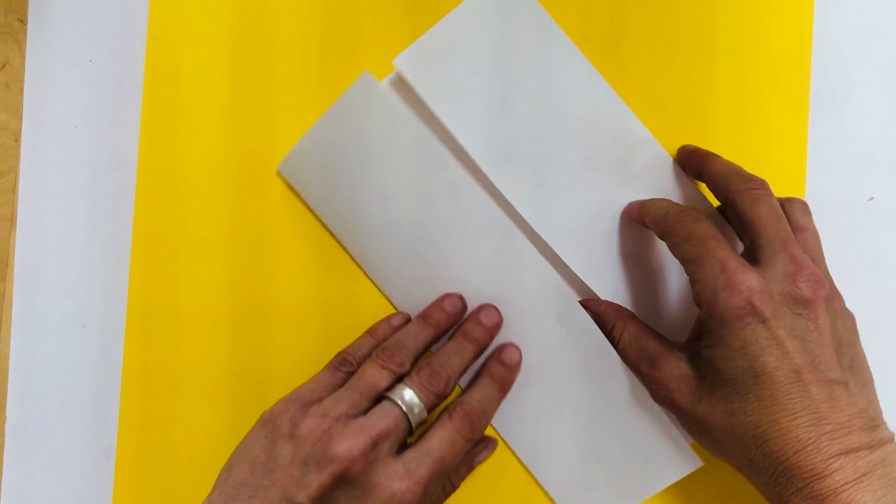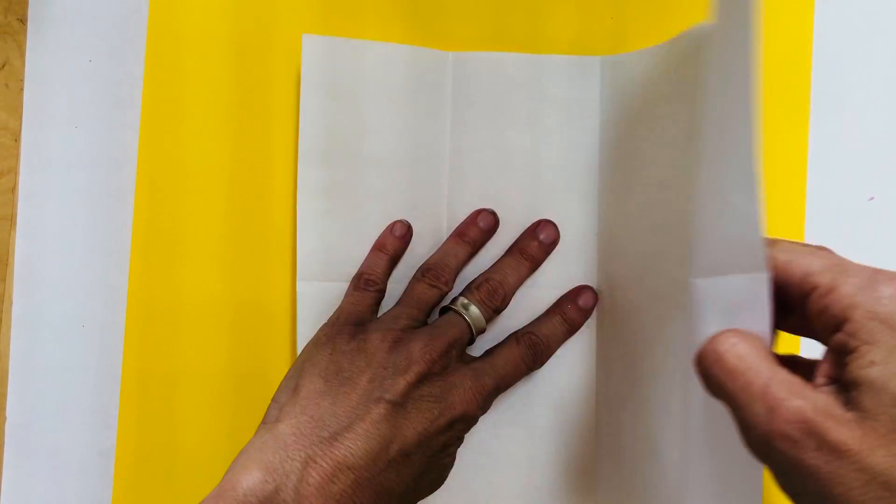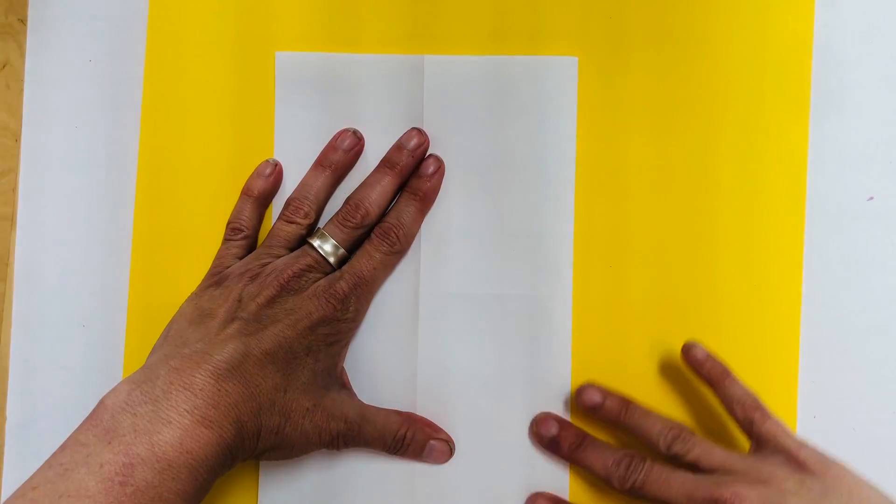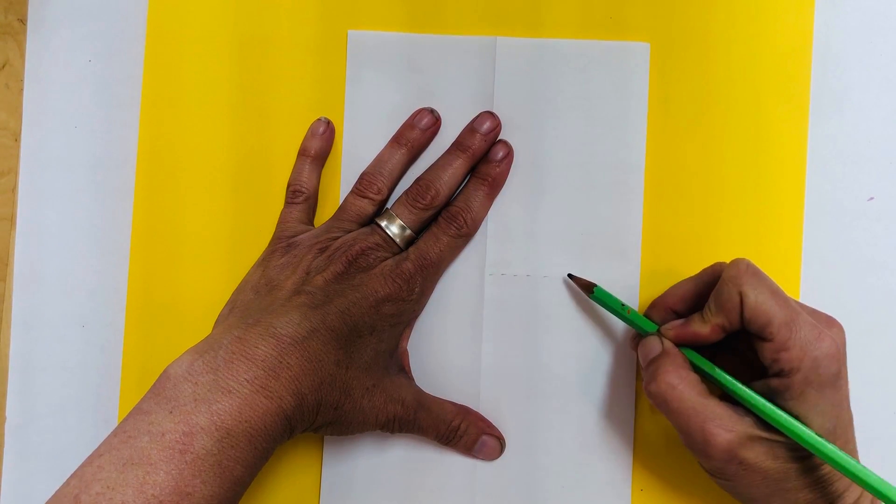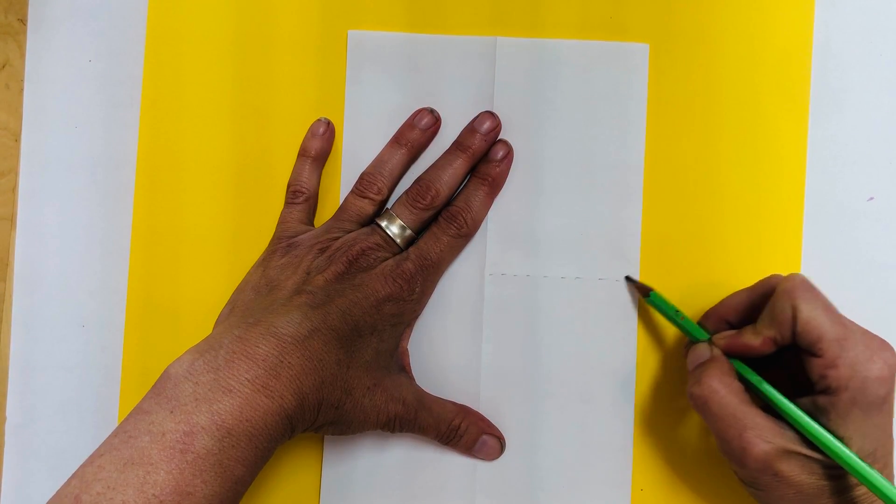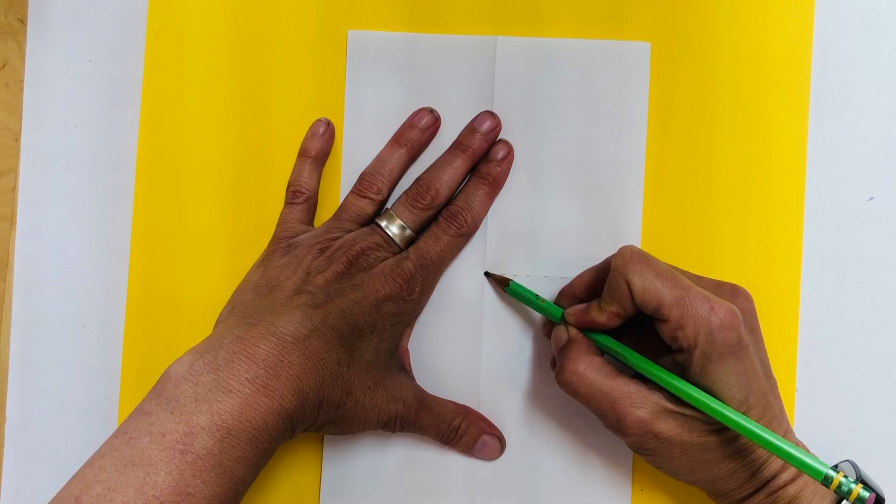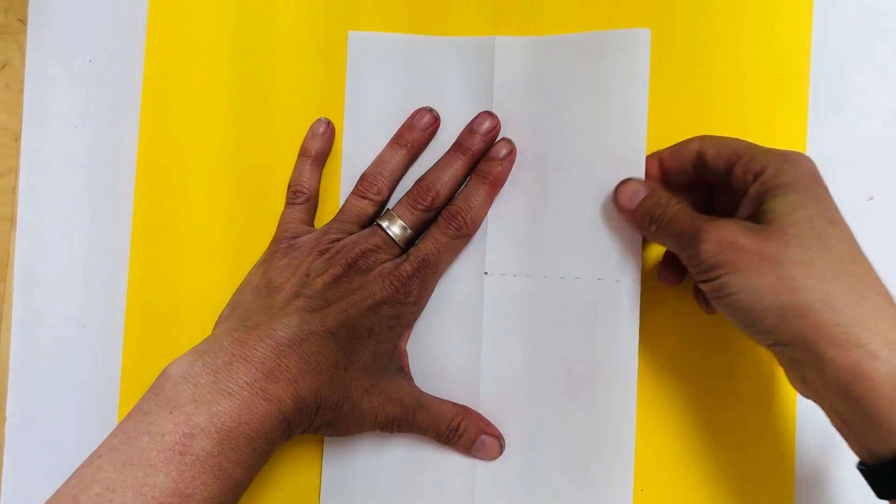So these two flaps that open up. Then you're going to close it and you're going to see this crease that we made in the middle. So you're going to just lightly pencil dash that one and then put a little dot right here because we're going to...